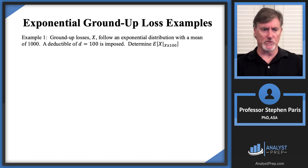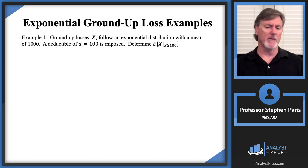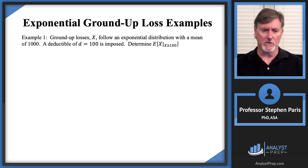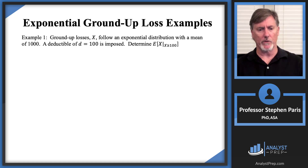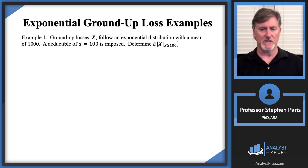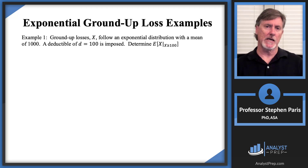Let's get started with an example. Say ground-up losses follow an exponential distribution with a mean of 1,000 and we're going to apply a deductible of 100. A deductible of 100 is imposed and we want to find the expected value of the loss given that the loss is greater than or equal to 100, which is the deductible.